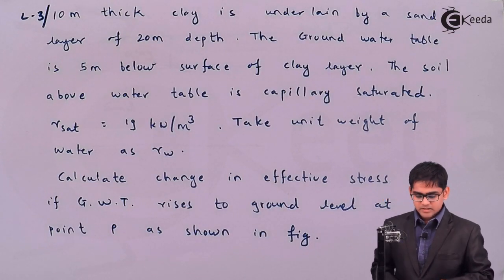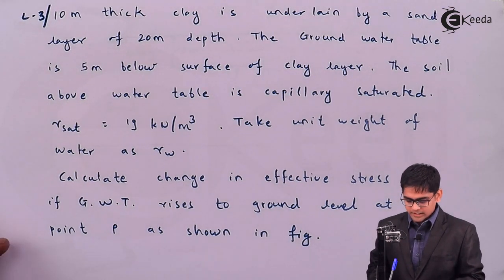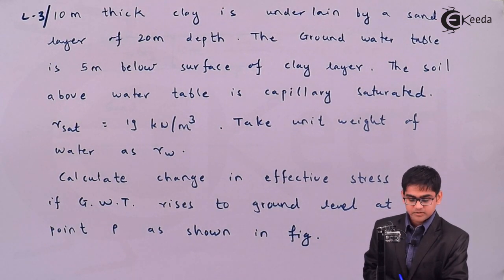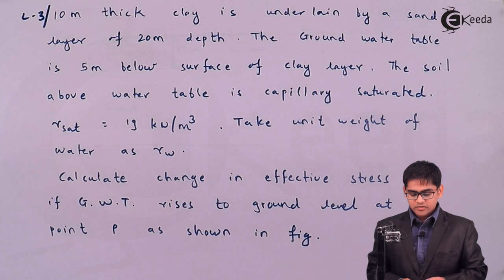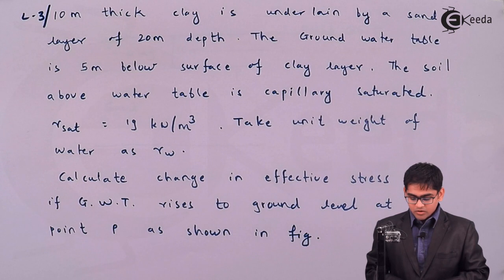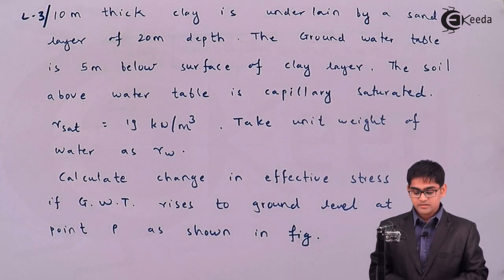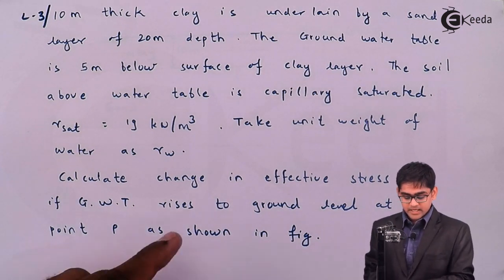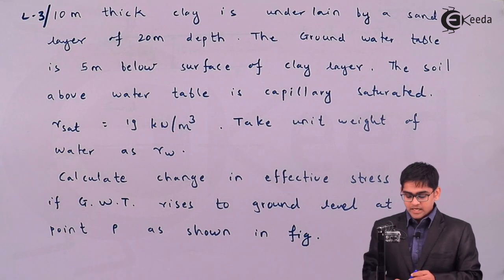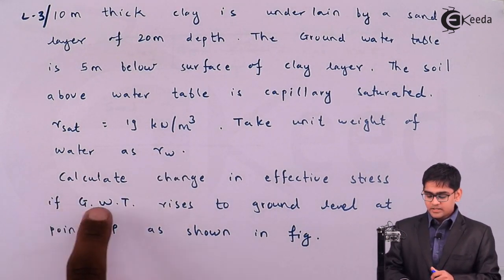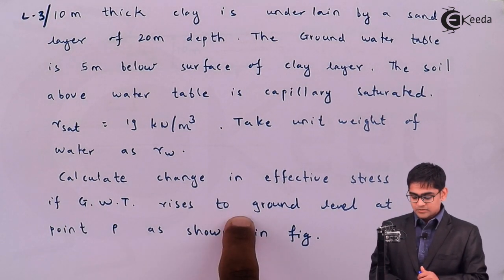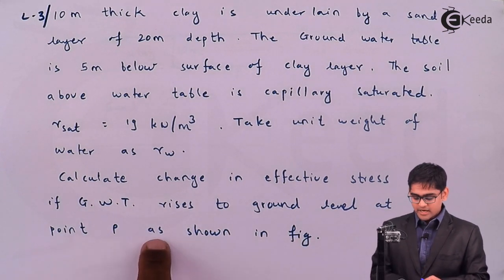We will move ahead with the next problem. The problem states: we have a 10 meter thick clay layer underlain by a sand layer of 20 meter depth. The groundwater table is 5 meters below the ground level, and the soil above the groundwater table is capillary saturated. The saturated unit weight of the soil is given as 19 kN/m³. Take the unit weight of water as γw and evaluate the change in effective stress if the groundwater table rises to ground level at point P shown in the figure.